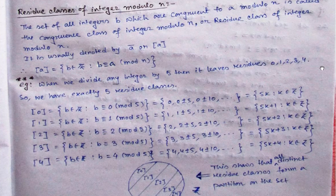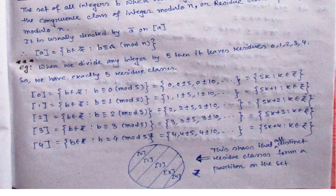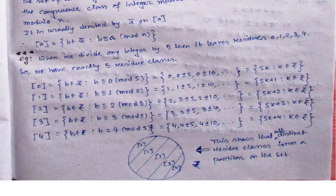If the definition is difficult to understand, we will take an example. Suppose we are taking an example where we are dividing the whole integers by 5. So if we divide any integer by 5, the possible remainders are 0, 1, 2, 3, and 4 — these are our remainder cases.